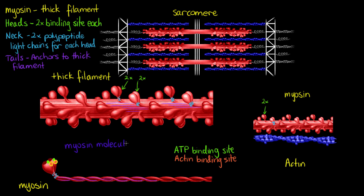To recap what we know about myosin: this individual myosin molecule is going to be made from two individual polypeptide chains, so it's a protein. It may also have two polypeptide light chains around each neck. And it's going to be a motor protein because it's involved in movement and it's powered by the hydrolysis of ATP at that ATP binding site.